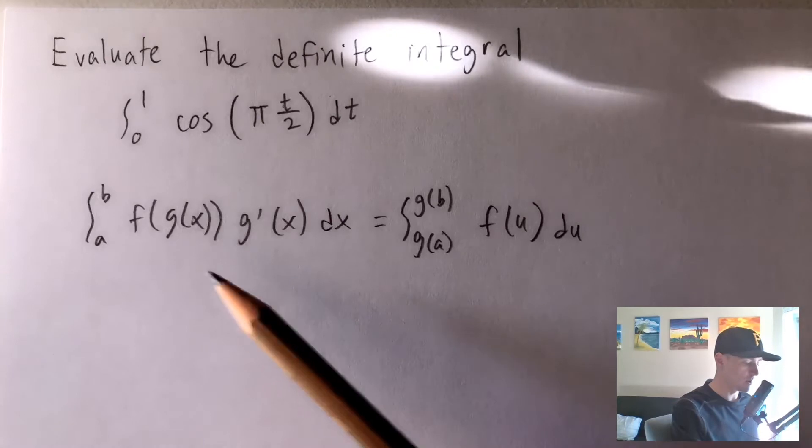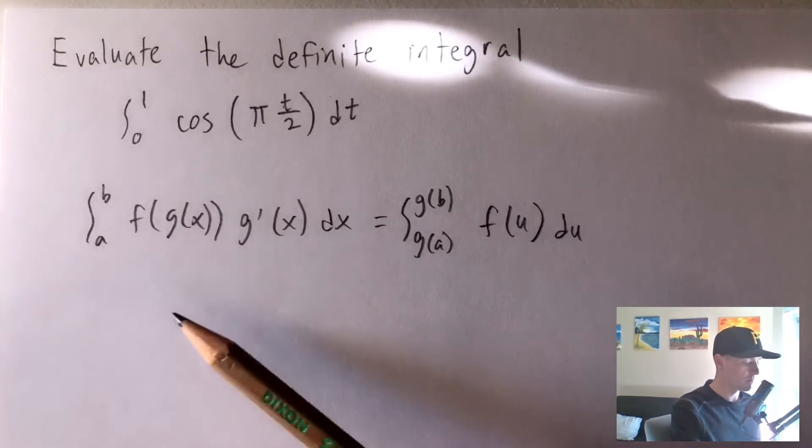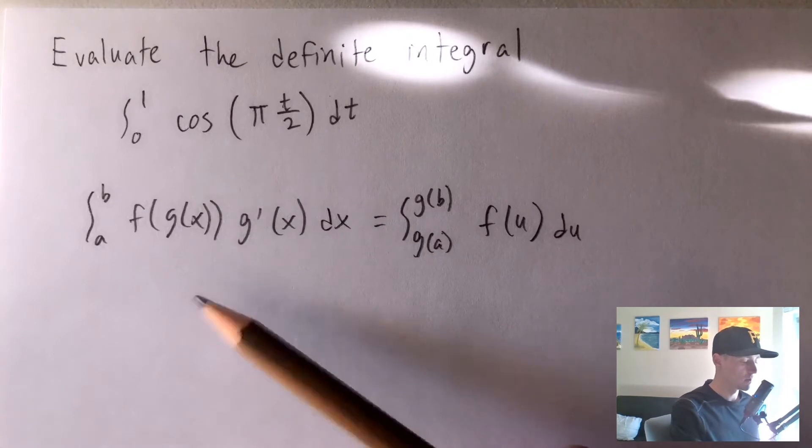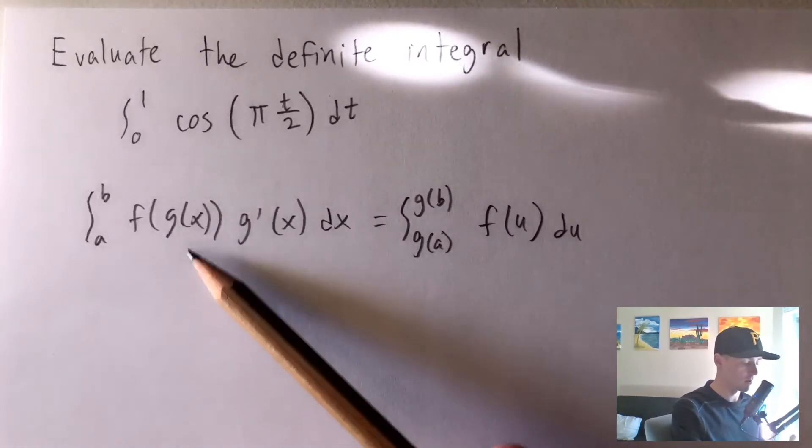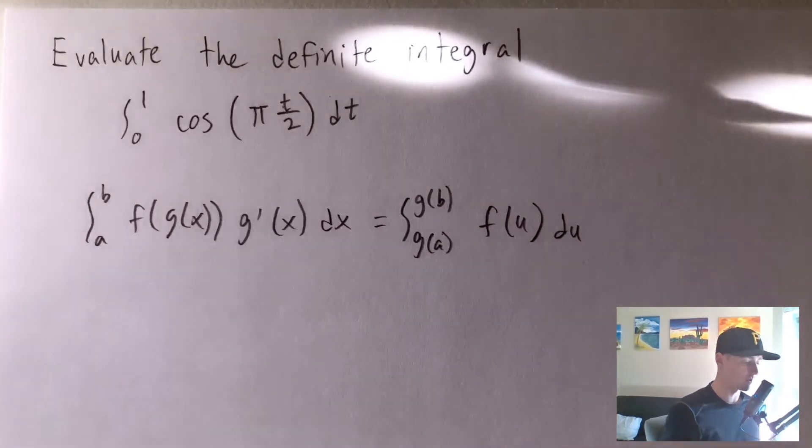Where we're going to say u equals this function g of x. So obviously there's kind of two pieces here. We have to make our g of x be something that's plugged into some other function. So we're looking for some sort of composite function.